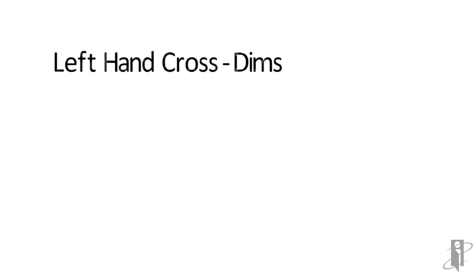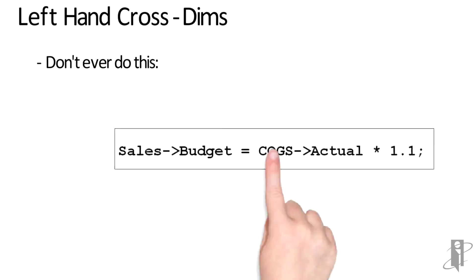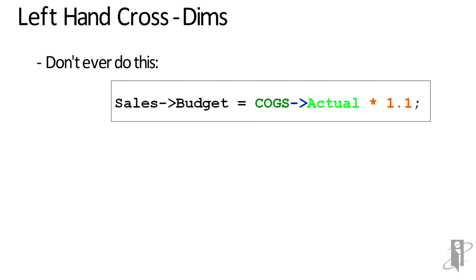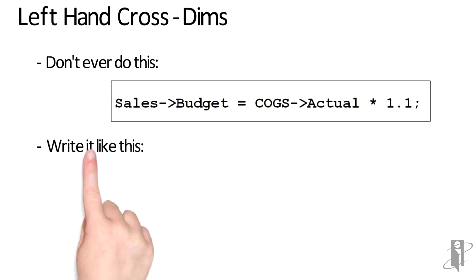99% of the time, even though they work, you really want to avoid using a cross-dimensional operator on the left-hand side of an equals. If I wanted to take cost of goods sold actual, increase it by 10%, and put the results in sales budget, I could write it as: sales->budget equals cost of goods sold->actual times 1.1. But the way this actually runs is it doesn't just pull budget into memory — it actually pulls in sales for all of my scenarios, and just keeps putting the result in sales budget, because the left-hand cross-dim doesn't limit which blocks are pulled into memory.